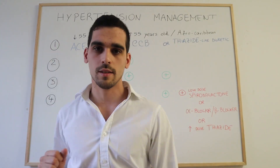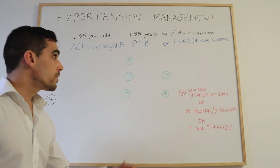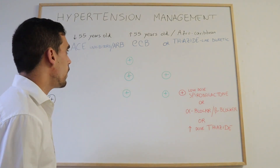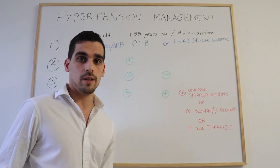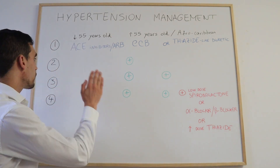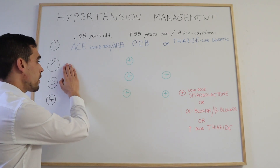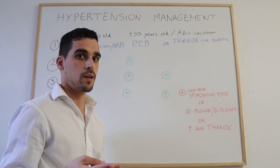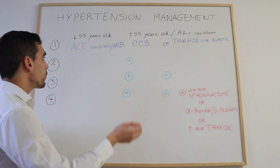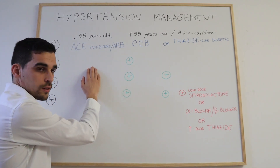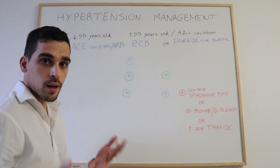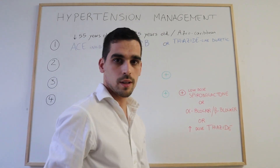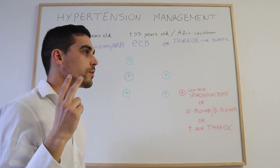That's the first stage. But if one drug was not enough to control their hypertension, we move to the second stage. Stage 2 involves two anti-hypertensive drugs: an ACE inhibitor or ARB, plus a calcium channel blocker or a thiazide-like diuretic — a combination of two drugs.